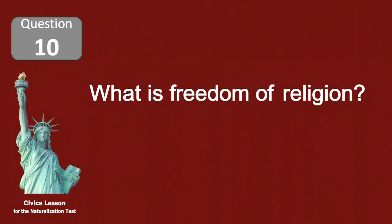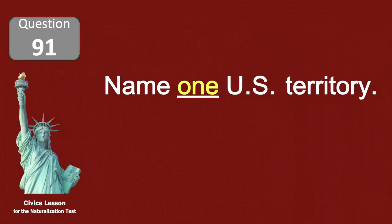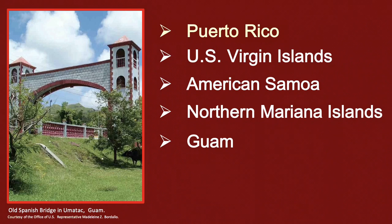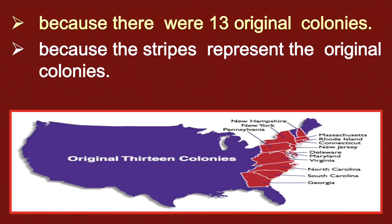What is freedom of religion? You can practice any religion or not practice a religion. Name one U.S. territory. Puerto Rico. Why does the flag have 13 stripes? Because there were 13 original colonies.